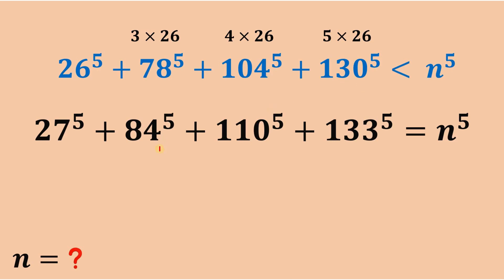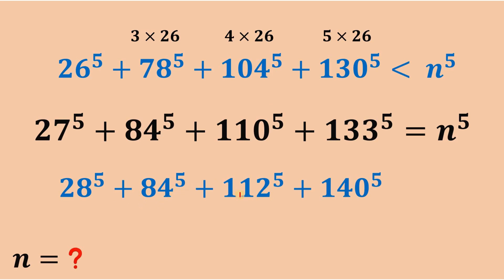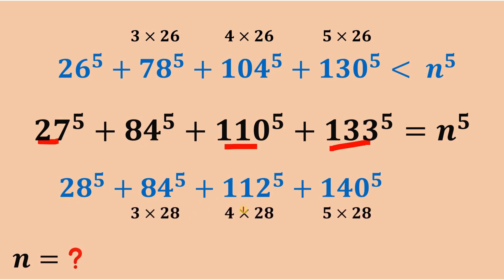Now we will use another set of numbers as an upper bound: 28, 84, 112, and 140 raised to the fifth power. These numbers are greater than the original numbers 27, 84, 110, and 133. We choose 84, 112, and 140 because 84 is 3 times 28, 112 is 4 times 28, and 140 is 5 times 28. Therefore, the sum of these numbers is greater than n raised to the fifth power.